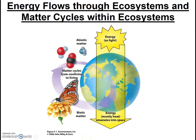We now have a basic understanding of two concepts related to the material needs of organisms: limiting factor and range of tolerance. Next, we're going to look at particular nutrients that organisms need to survive and to see how they cycle through ecosystems.